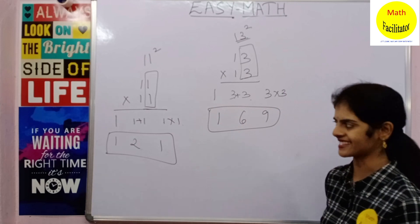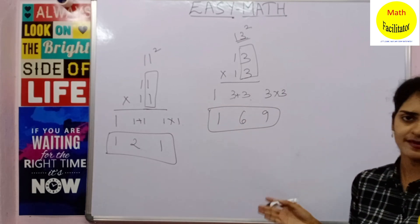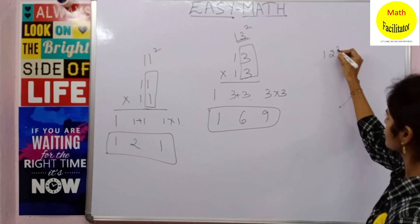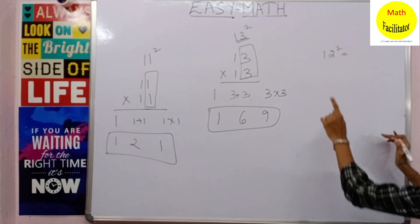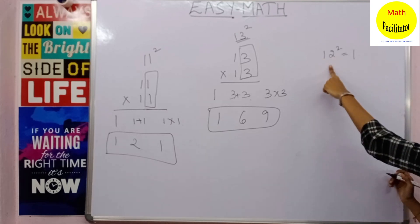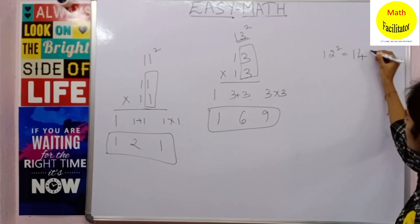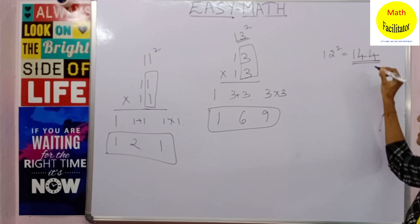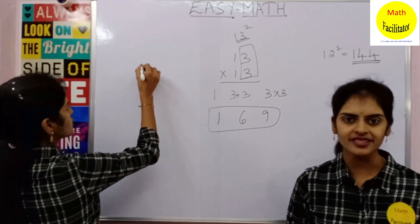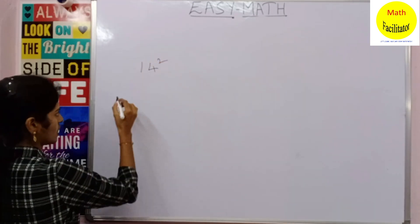Even without writing the steps you can do it. Suppose if you want to find out 12²: write 1 first, then in the units place you have 2, so 2 + 2 = 4, and 2 × 2 = 4. So 12² = 144.